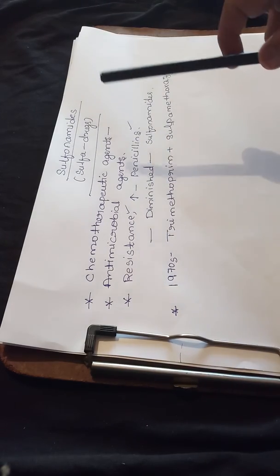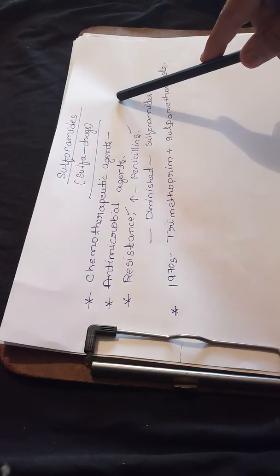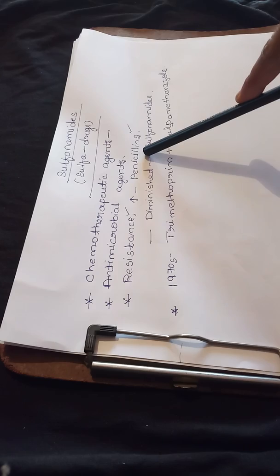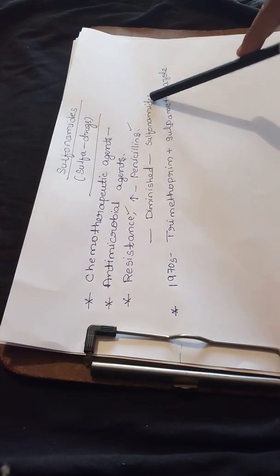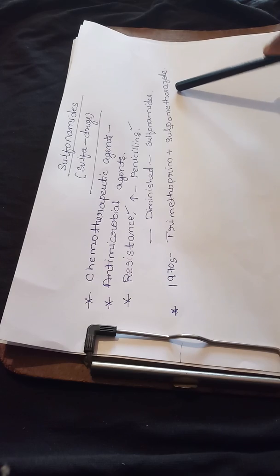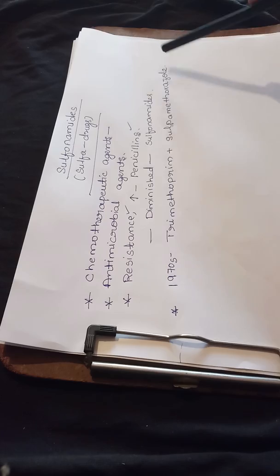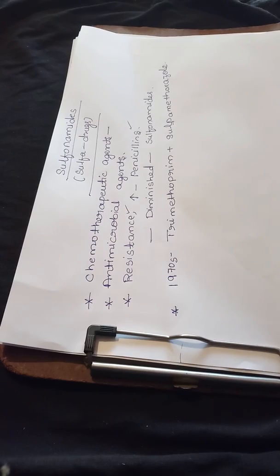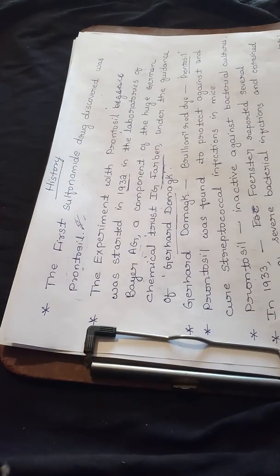This is the brief introduction to sulfonamides - they are antimicrobial agents useful for bacterial infections, they develop resistance very fast, and penicillins reduced their use. But a combination of trimethoprim and sulfamethoxazole is still prescribed. Let us now go to the history or development of sulfonamides.